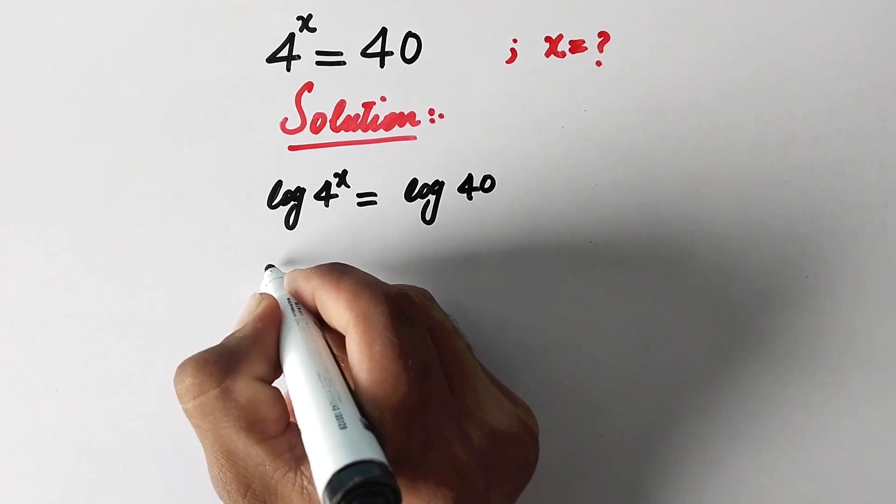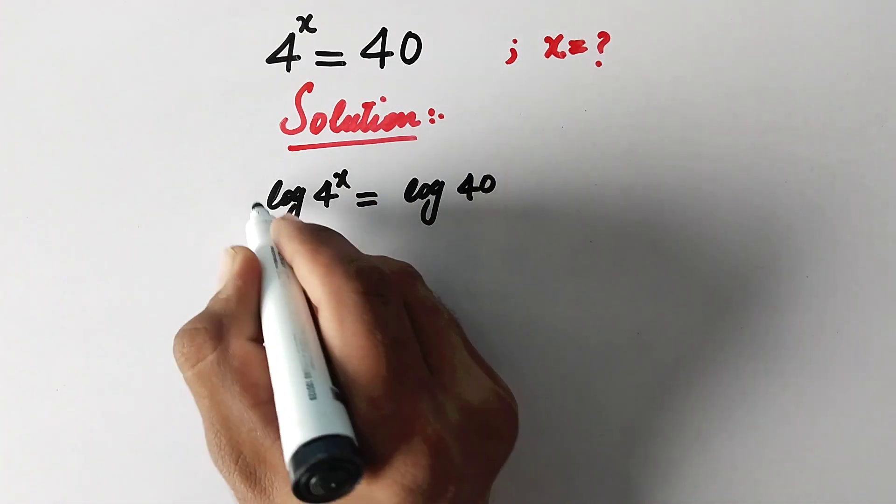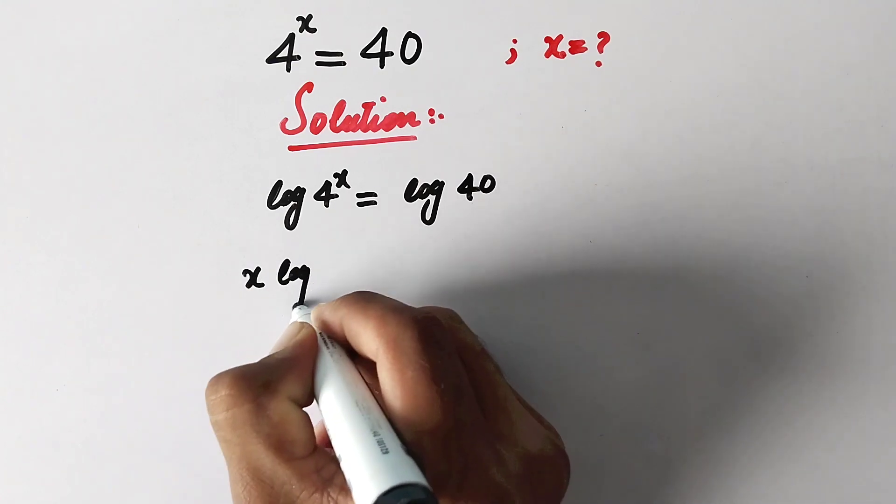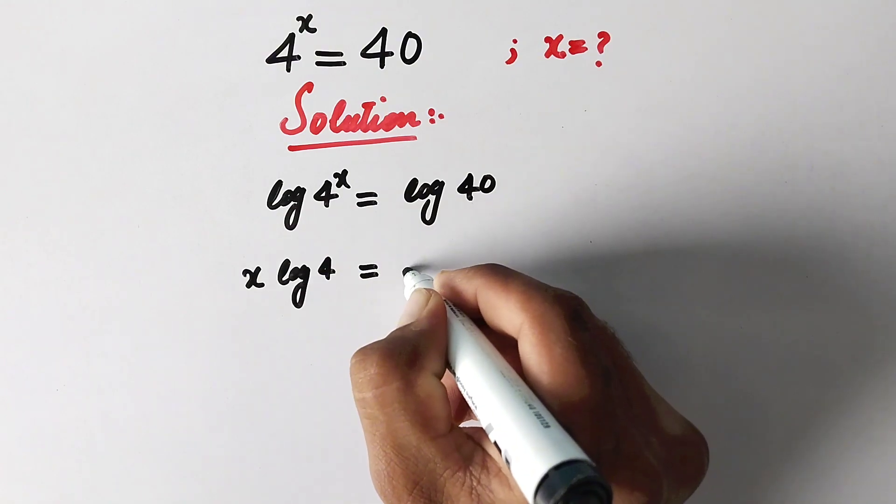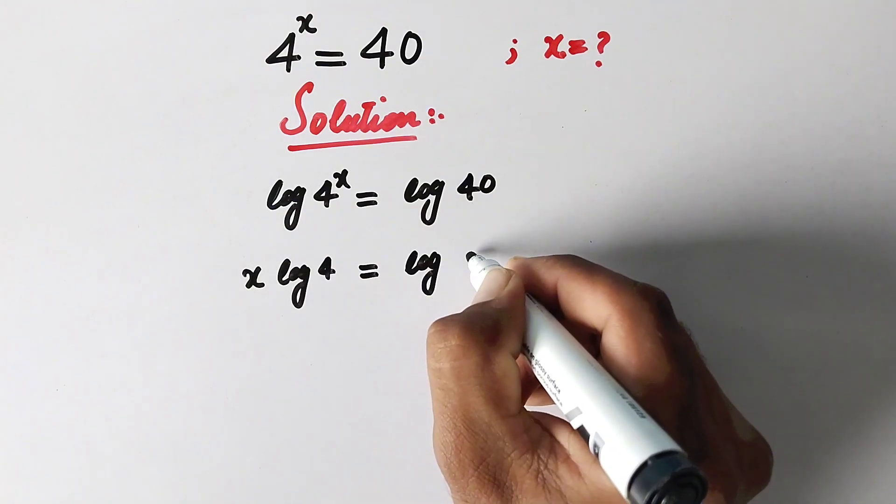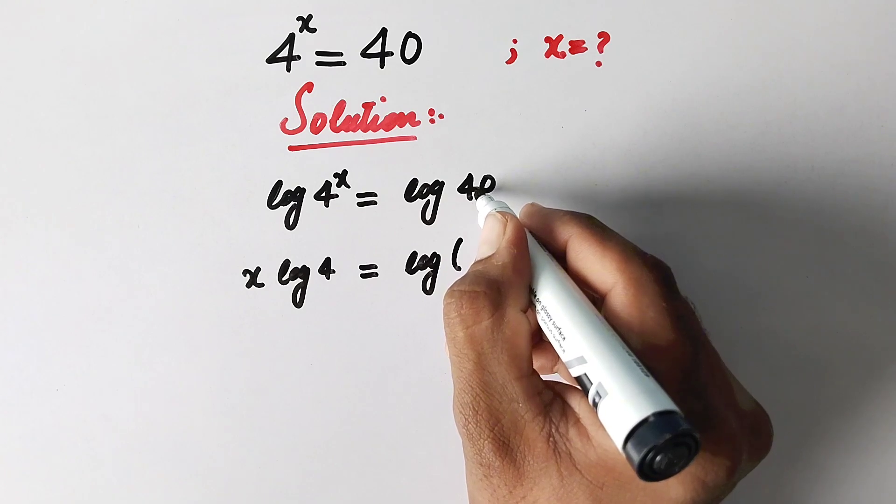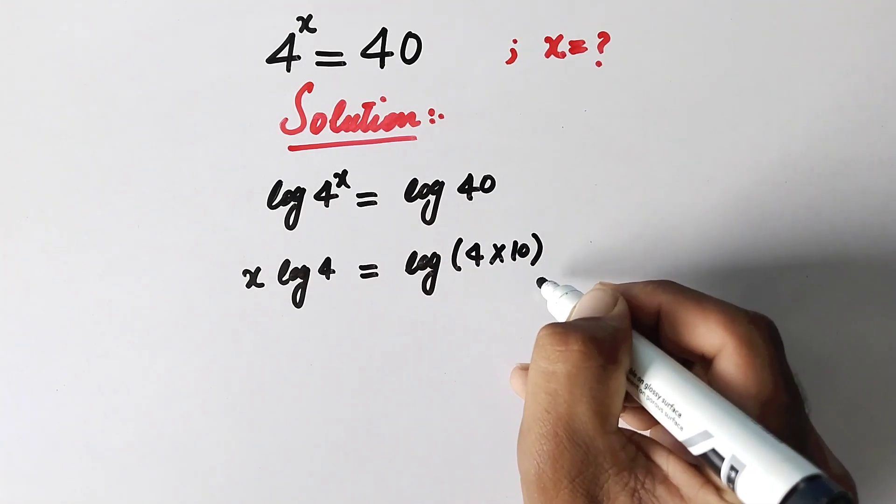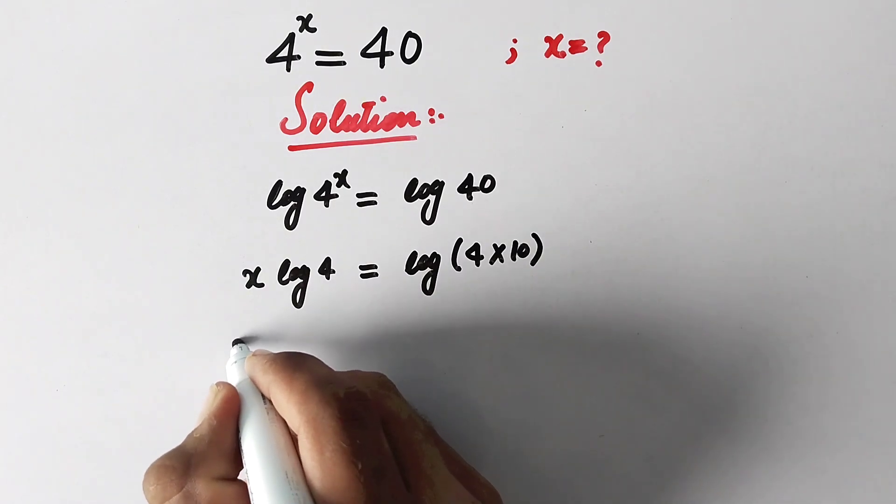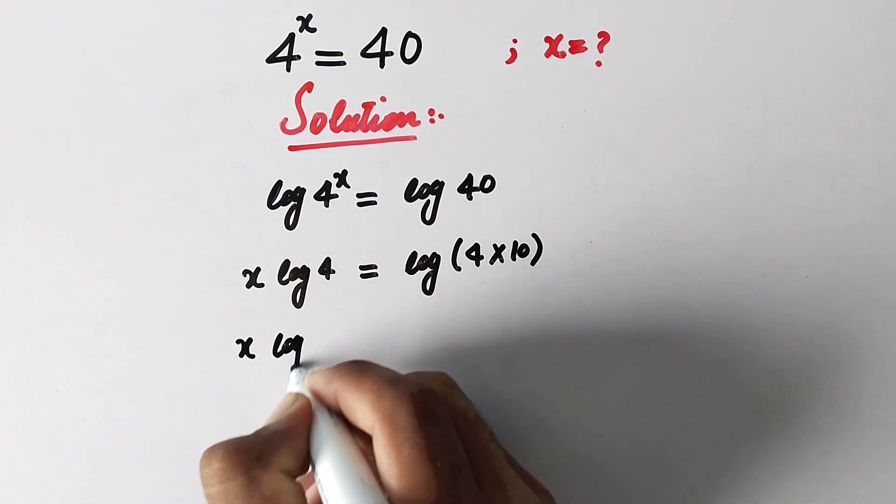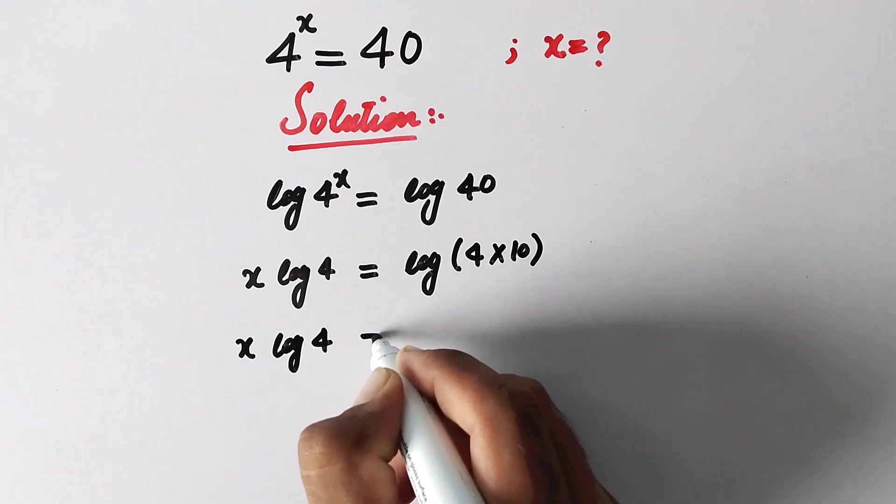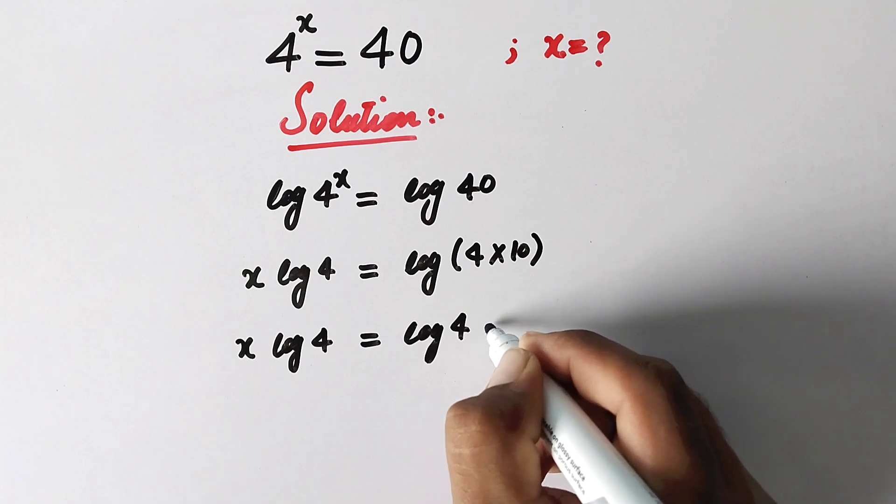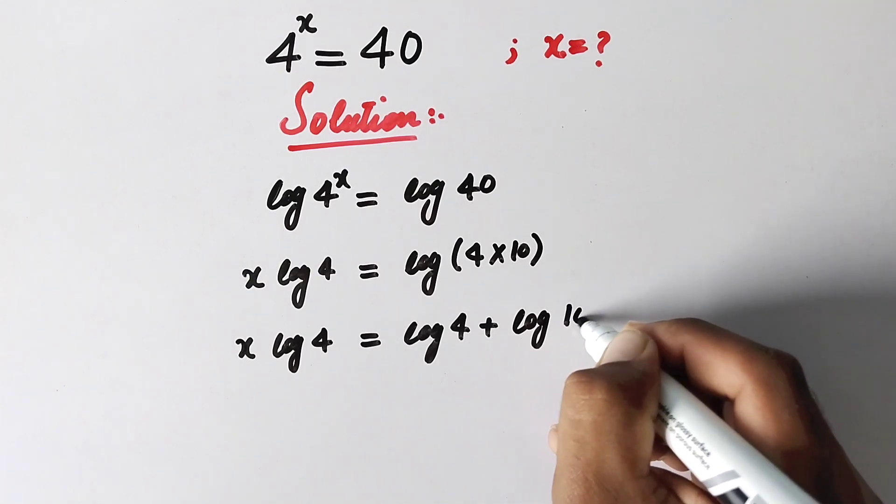And in the next step we will take the power before log, so here it will be x times log of 4 equal to log of 40. This 40 is the same as 4 multiplied by 10, so now in the next step we can write x times log 4 is equal to log 4 plus log 10.